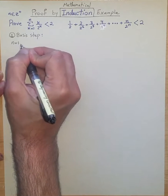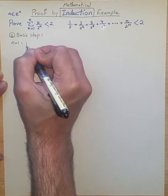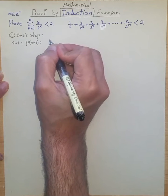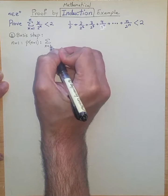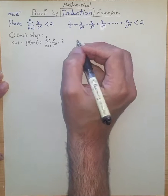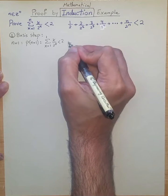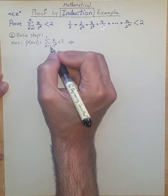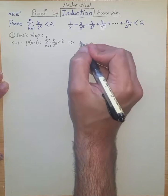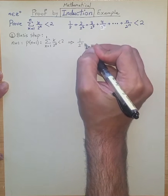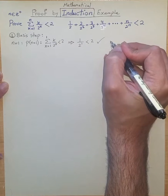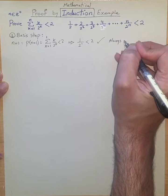When n = 1, we want to show that the predicate corresponding to n = 1 is true, which means sigma from k=1 to 1 of k/2^k is less than 2. On the left-hand side we only have one component since k goes from 1 to 1: it is 1/2¹ < 2, which is always true. So this is proved.